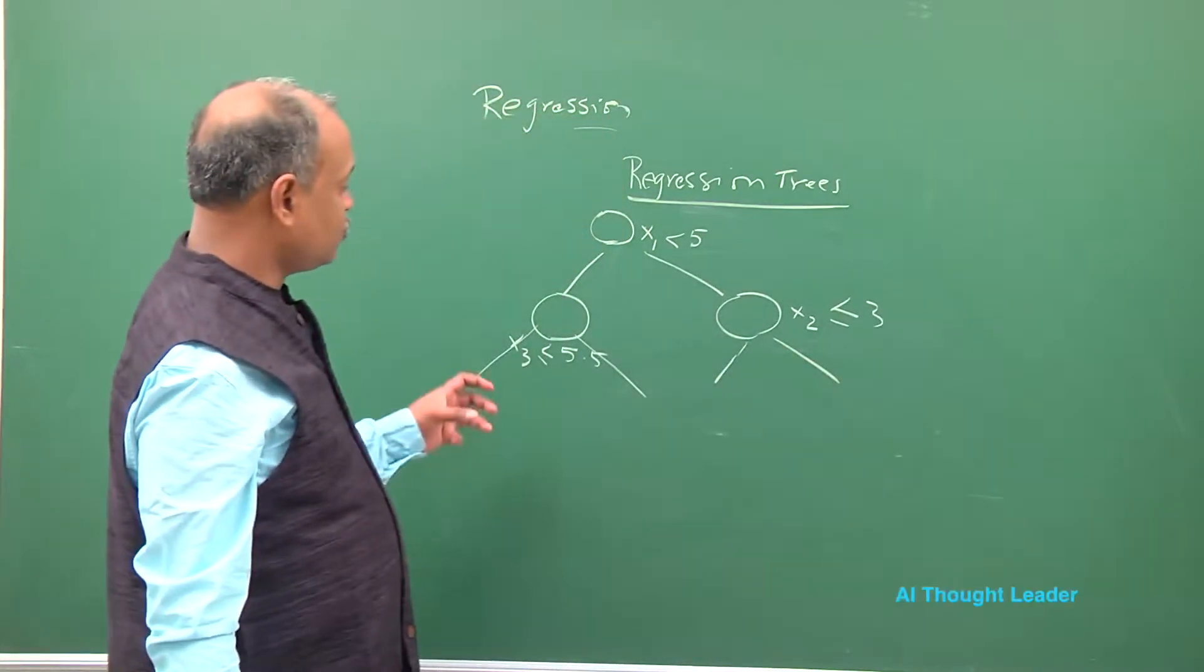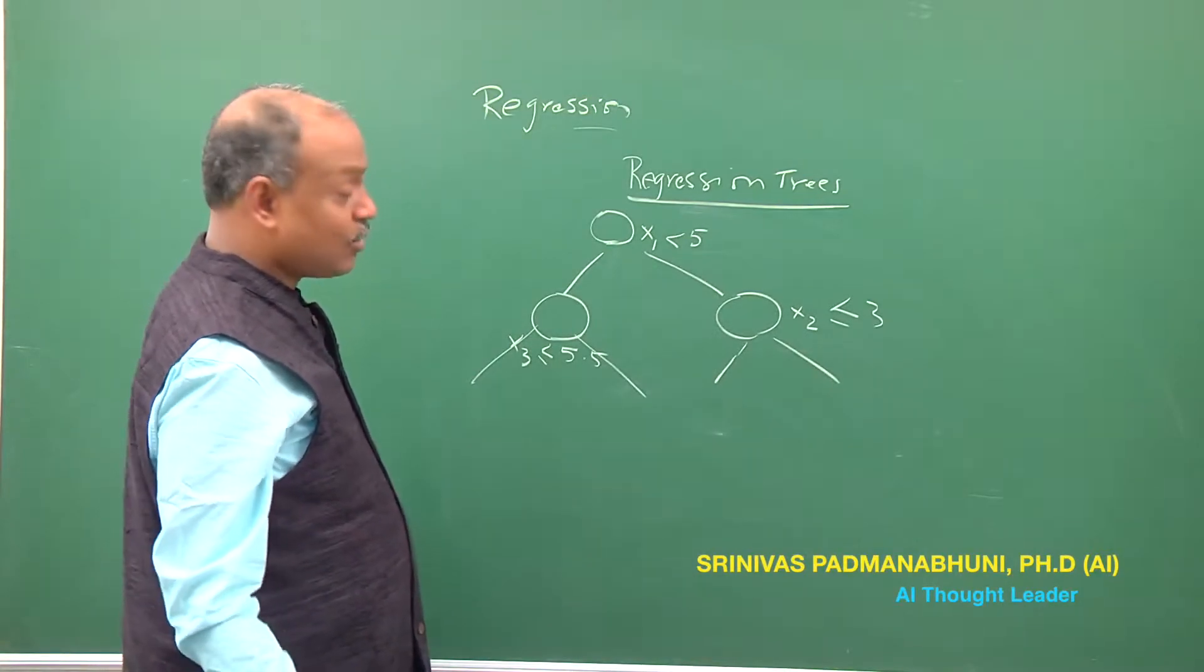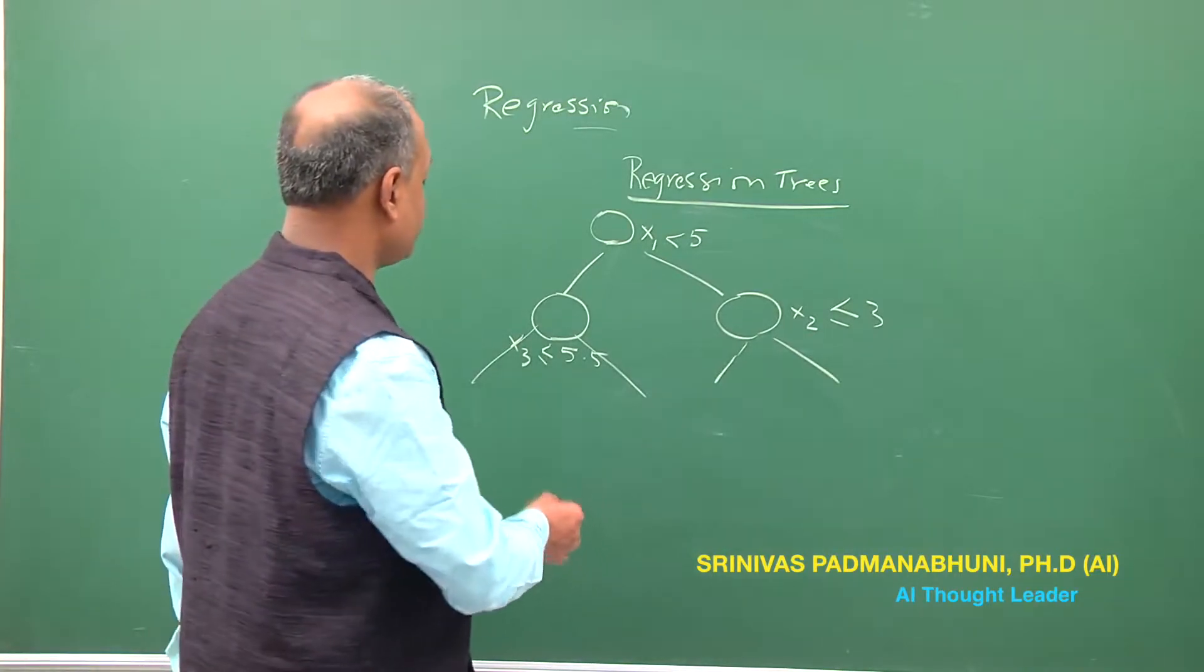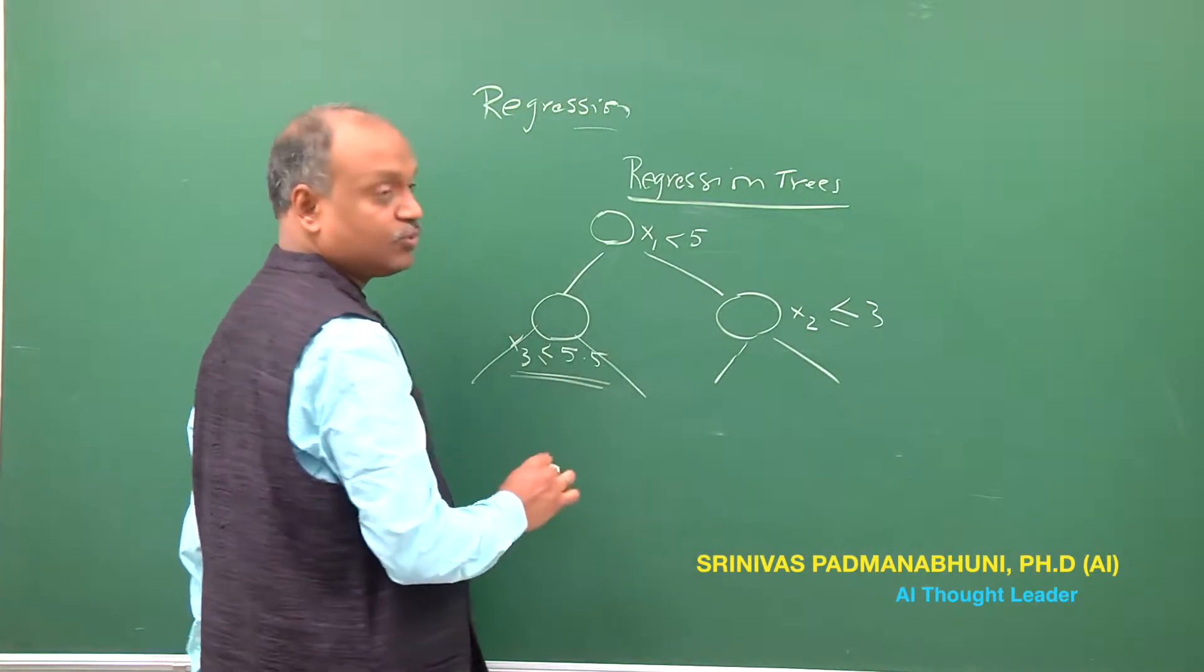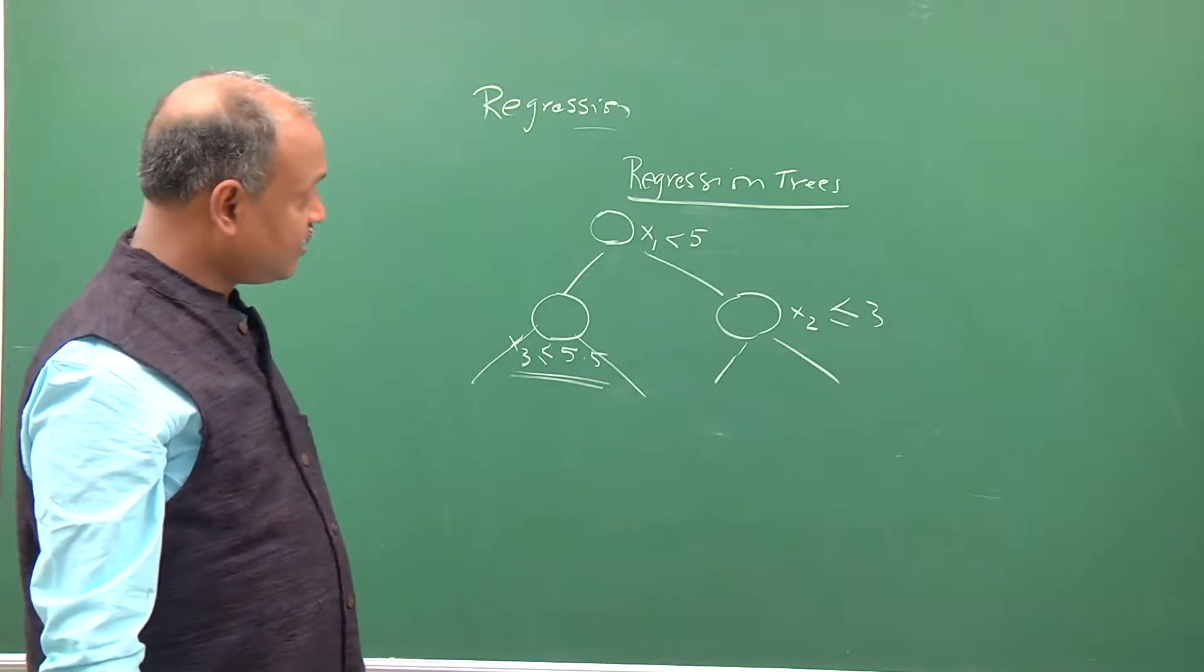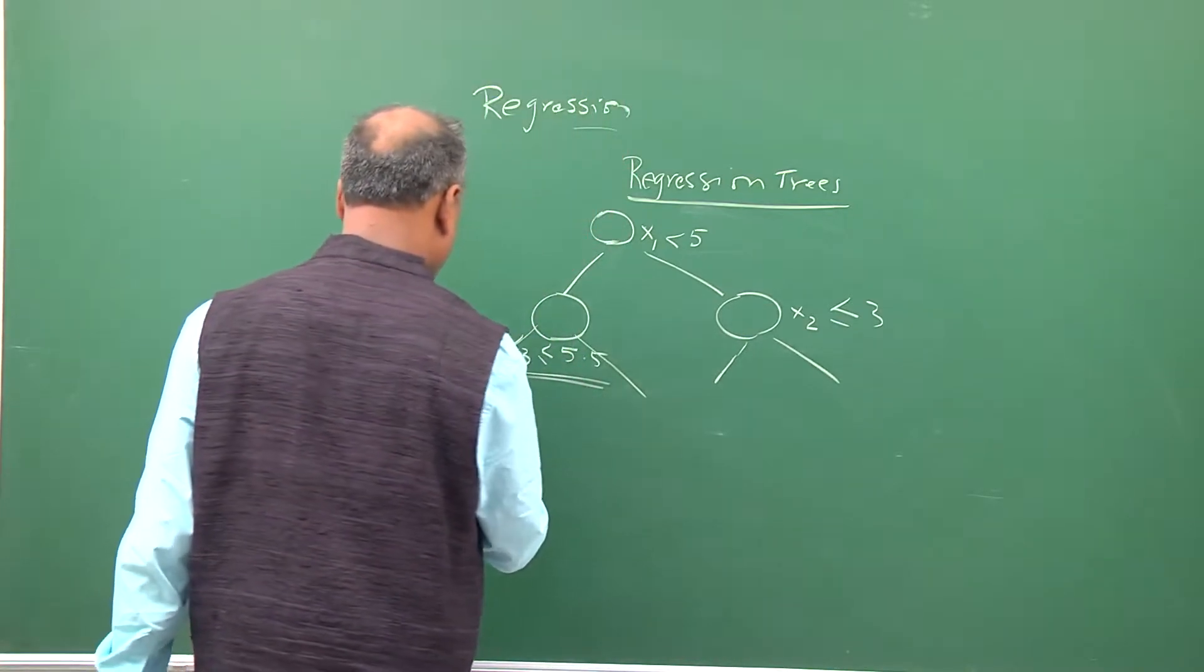And the way this is chosen, as we discussed, is by looking at how the entropy or the coefficient plays out in the context of the corresponding choice of the variable. The only difference from the classical classification tree is that at the leaf node you will have all the data points.